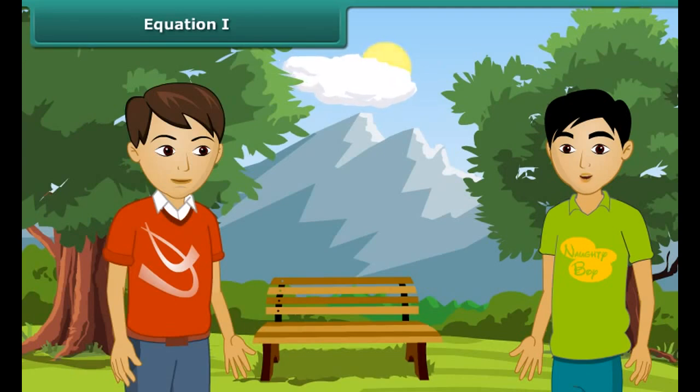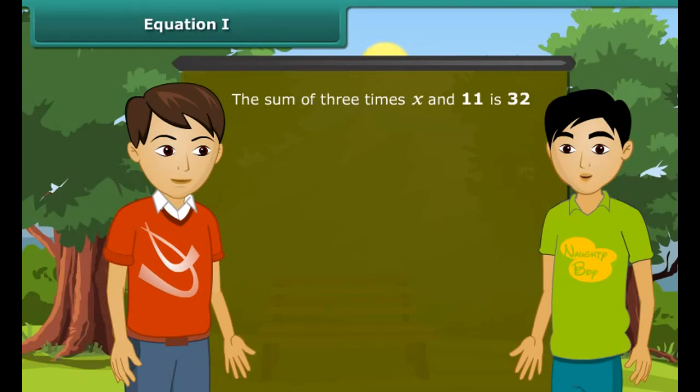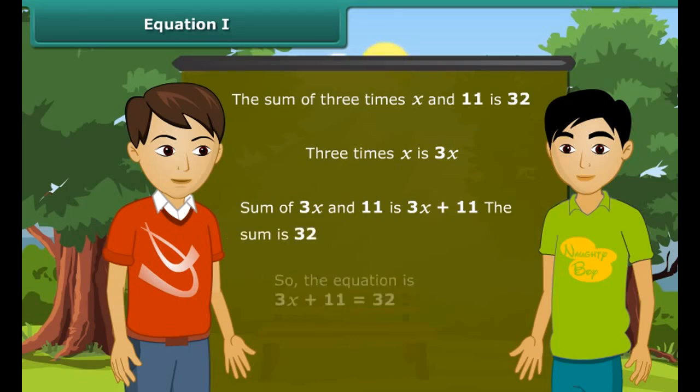Now I will tell you a statement. You have to change it into an equation. Are you ready? Yes. The sum of 3 times X and 11 is 32. 3 times X is 3X. Sum of 3X and 11 is 3X plus 11. The sum is 32, so the equation is 3X plus 11 is equal to 32.